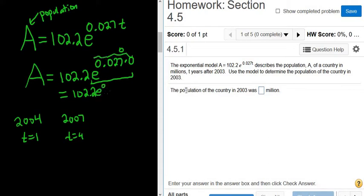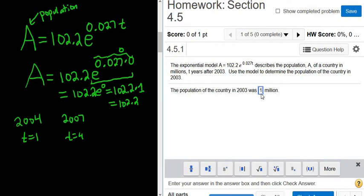And E to the 0, I'll write it, E to the 0 is 1. So this is 102.2 times 1. So that's just 102.2. So the population of the country in 2003 was 102.2. Let's try it.